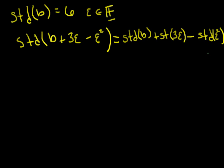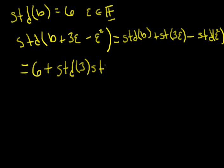We know the standard part of B is already equal to 6. So that's equal to 6, plus — now the standard part distributes across multiplication — so this is going to be the standard part of 3 times the standard part of epsilon, minus — and the standard part distributes across powers — so this will be the standard part of epsilon squared.